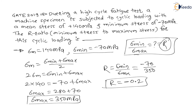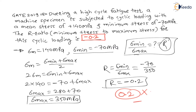Therefore R is equal to minus 0.2. My dear students, in the fill-in-the-blanks space provided, you have to type minus 0.2. Don't forget to type the negative sign. If you type 0.2 only, you will get zero marks. You must type minus 0.2 to get two marks for this question.